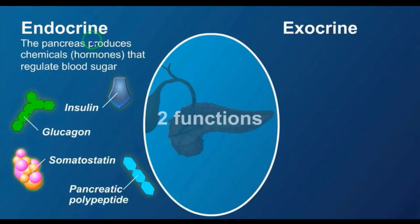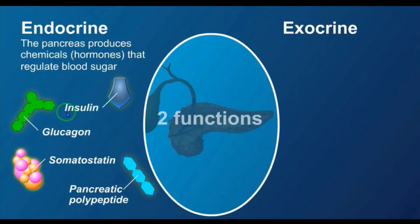The islets of Langerhans consist of 2 types of cells: alpha cells and beta cells. The alpha cells secrete glucagon and the beta cells secrete insulin.